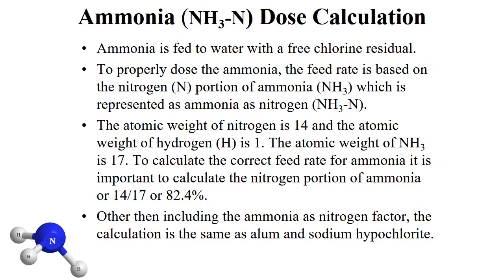Another common chemical at water treatment plants is ammonia. Calculating the feed rate is similar to alum and hypo, but there is a slight difference. Ammonia is fed to water with a free chlorine residual with the goal of creating monochloramine. The feed rate is based on the nitrogen portion of ammonia, represented as ammonia as nitrogen. The atomic weight of nitrogen is 14, hydrogen is 1, so the atomic weight of ammonia is 17. The nitrogen portion is 14 divided by 17, or 82.4%.